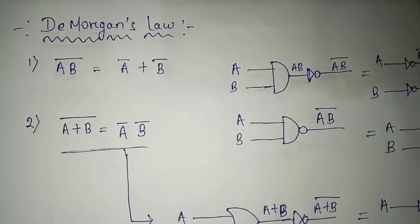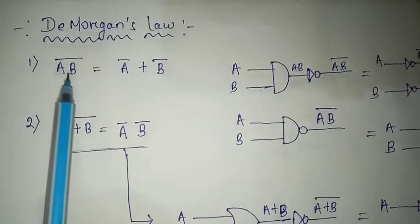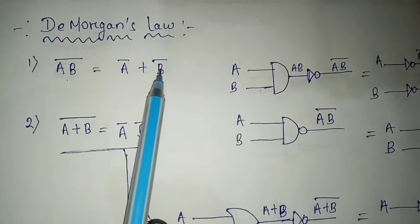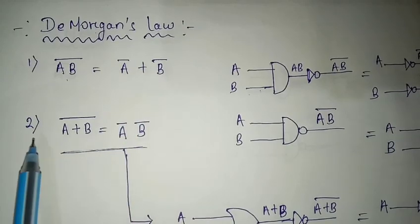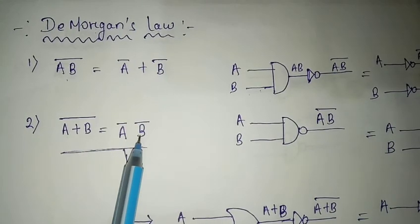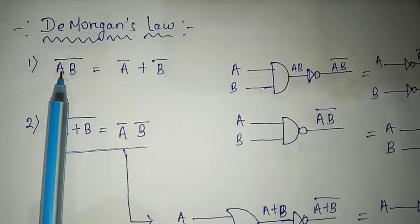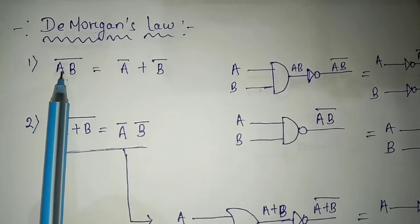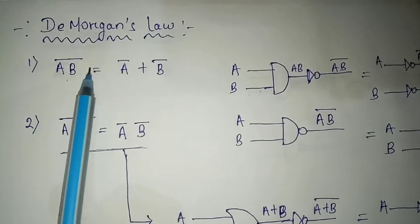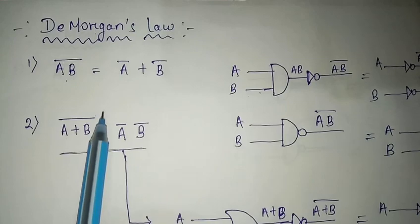In De Morgan's Law, there are two expressions. One is (A·B)̄ = Ā + B̄. Another expression is (A+B)̄ = Ā · B̄. If you see the previous video, I told you that this is the NAND gate expression and this is the NOR gate expression.